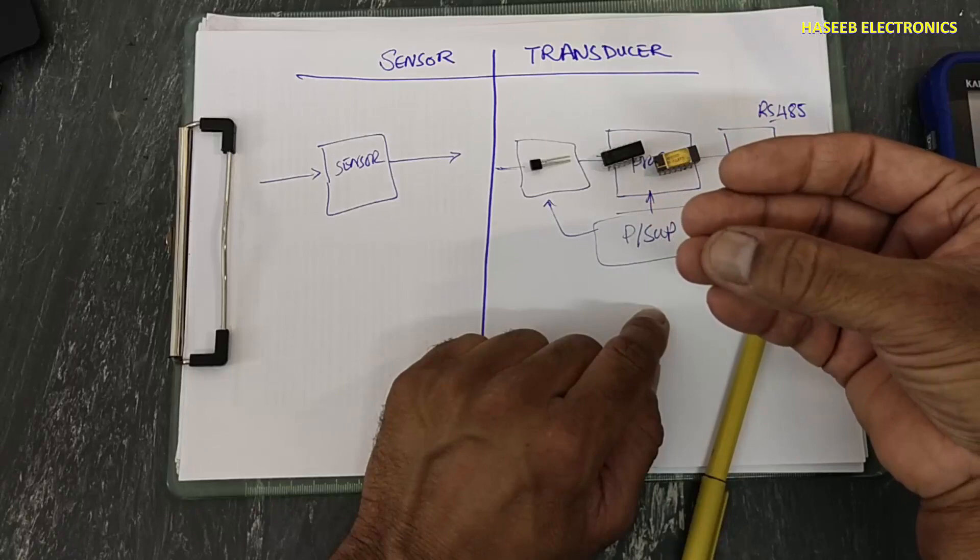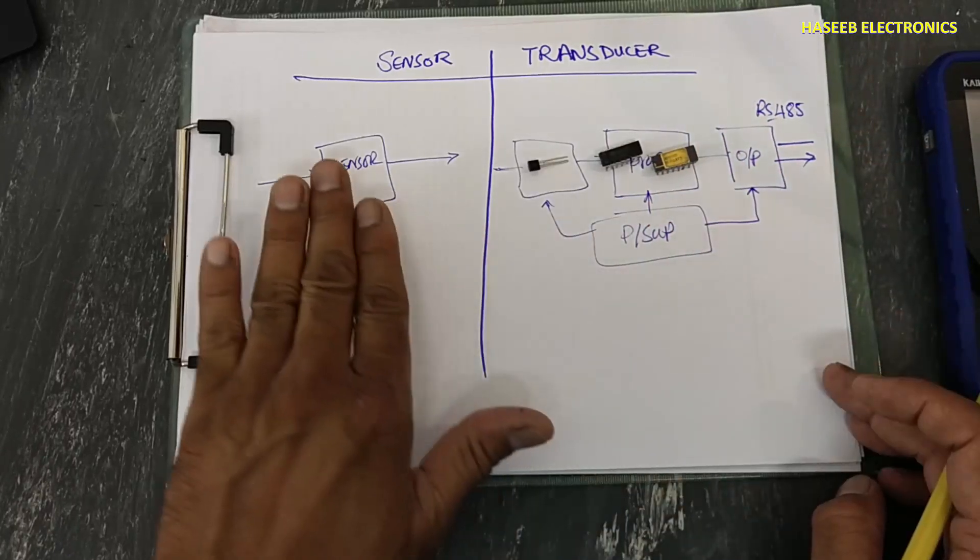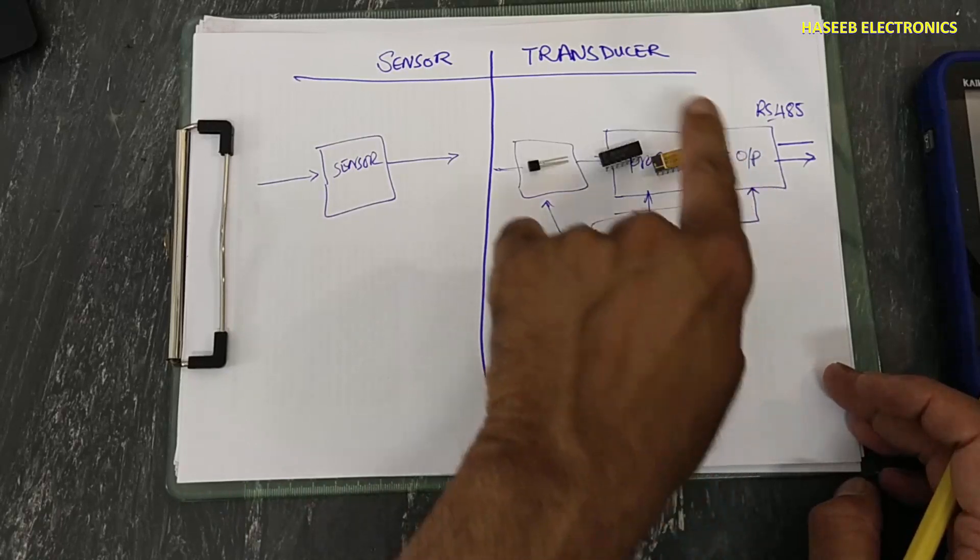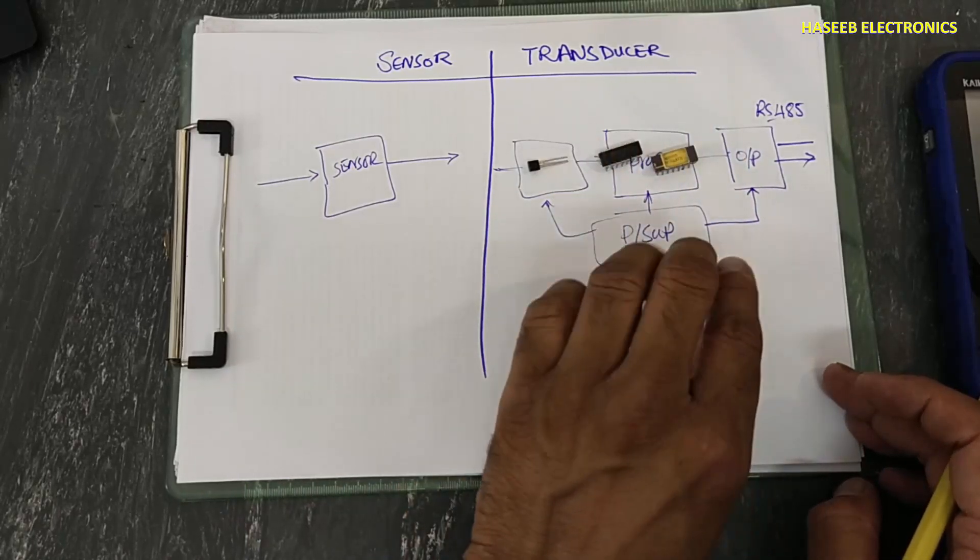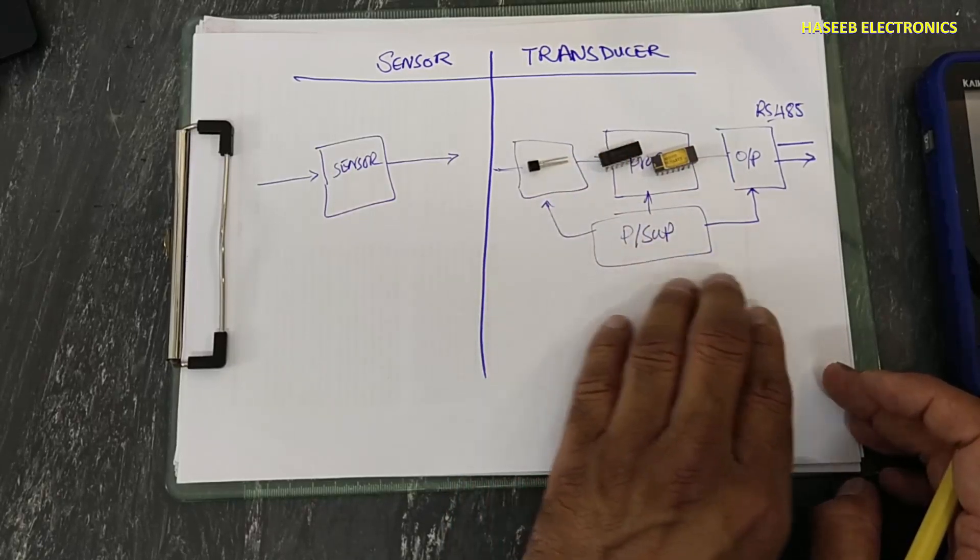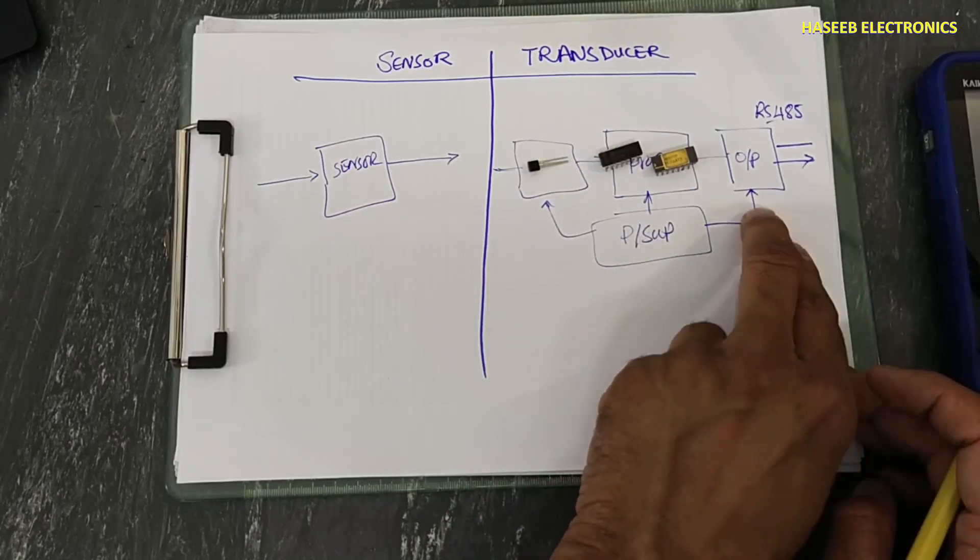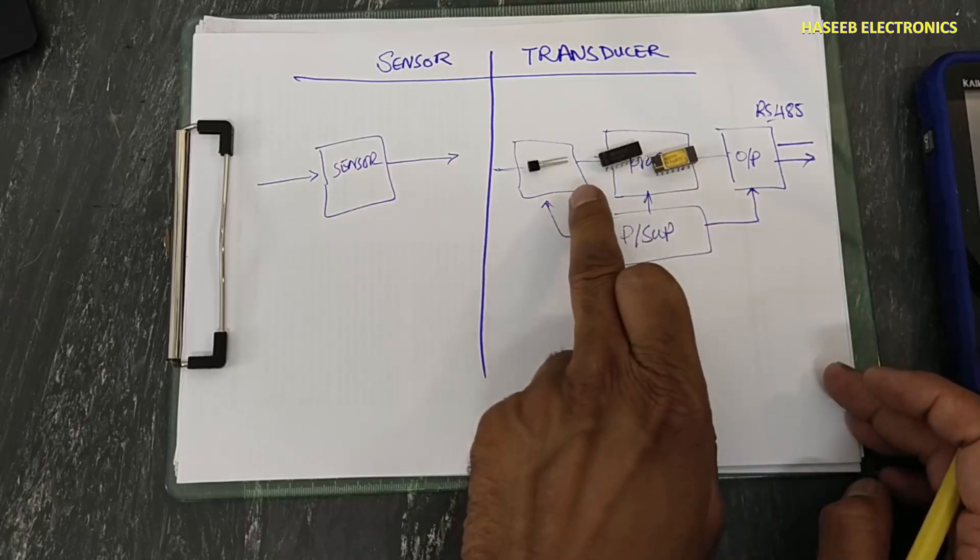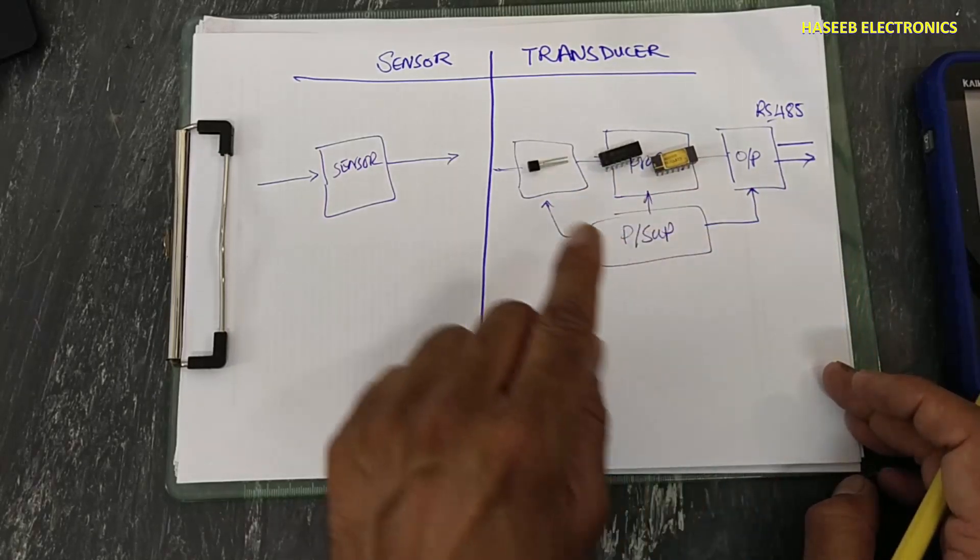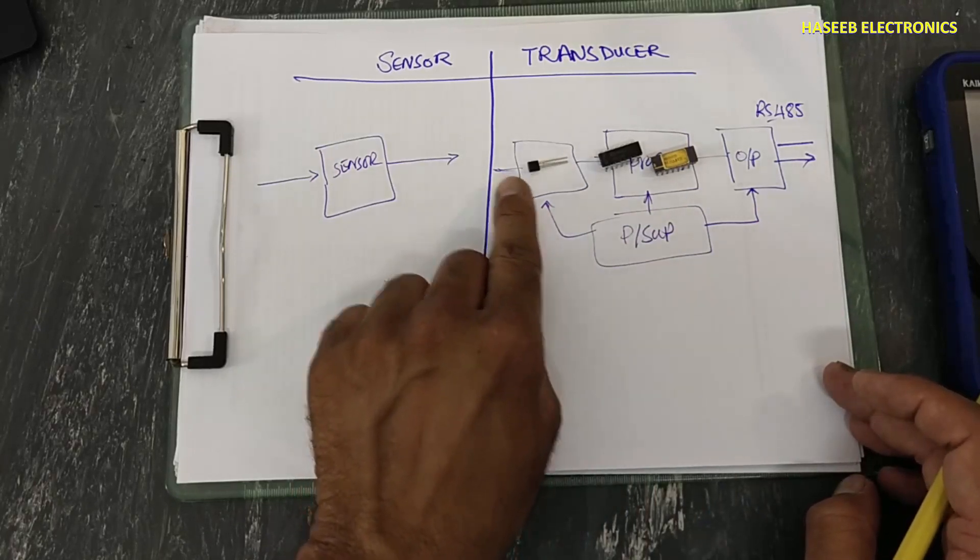Sensor is alone here. Sensor with complex electronic circuits which makes processing conversion, it has power supply, it has output circuit, and it provides that signal into our required format. Here was heat energy, but here we are receiving RS-485 signal.